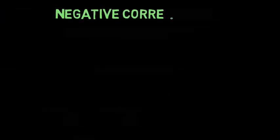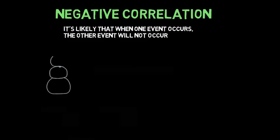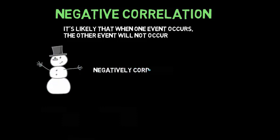On the other hand, two states are negatively correlated when it's likely that when one event occurs the other will not occur. For instance, when it snows it's often not very sunny, so snowing and sunniness are negatively correlated.